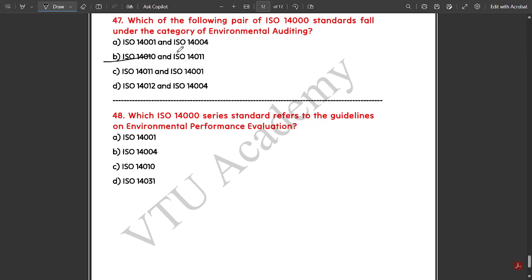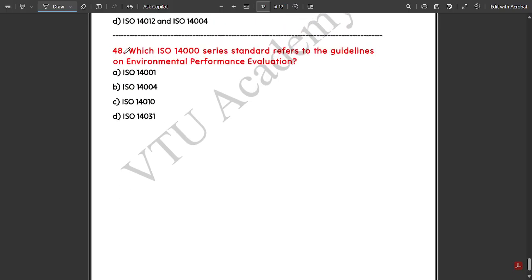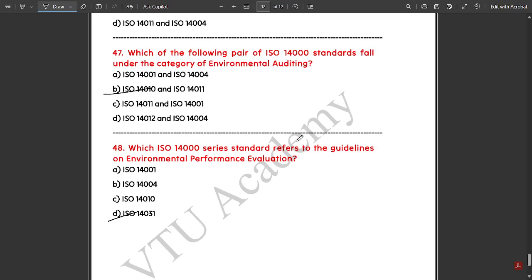Which pair of ISO 14000 standards fall under the category of environmental auditing? ISO 14010 and ISO 14011. Which ISO 14000 series standard refers to the guidelines on environmental performance evaluation? ISO 14031.